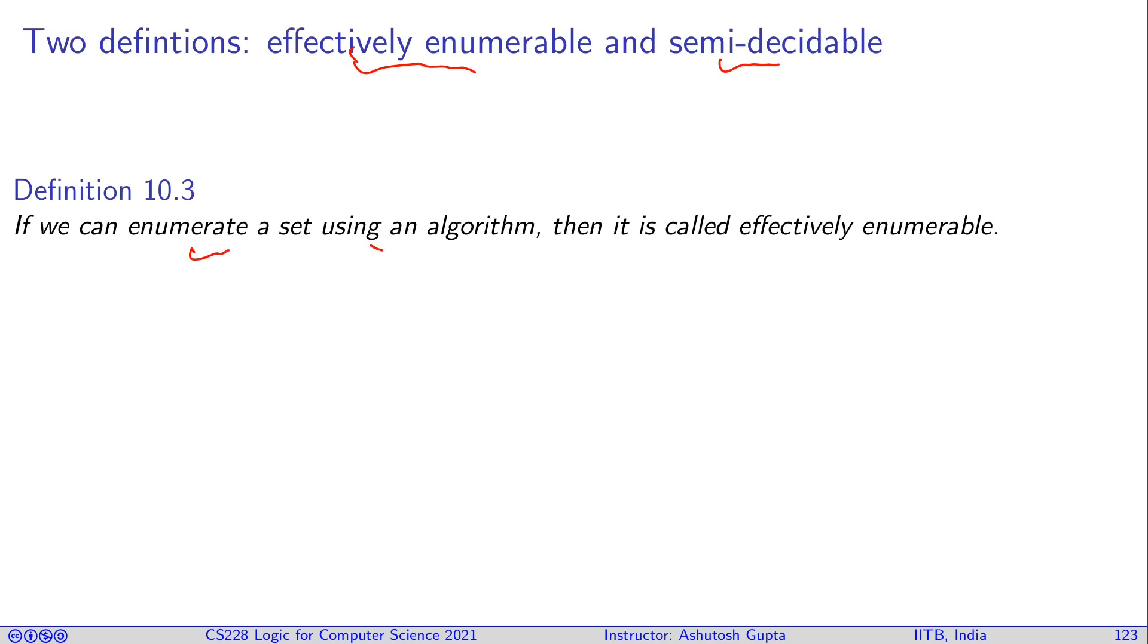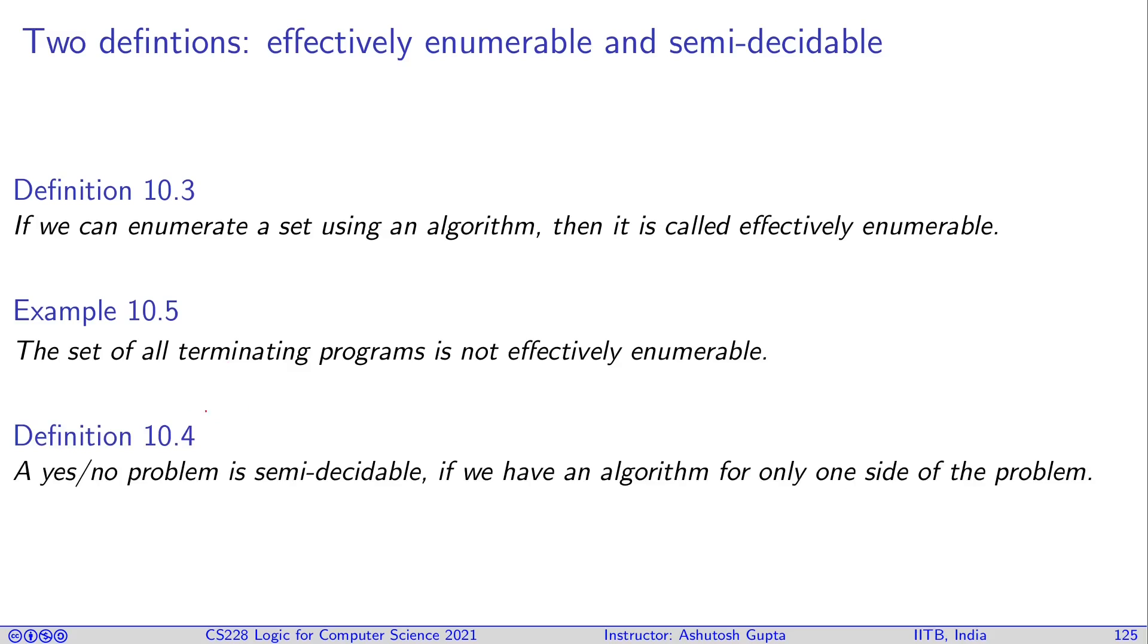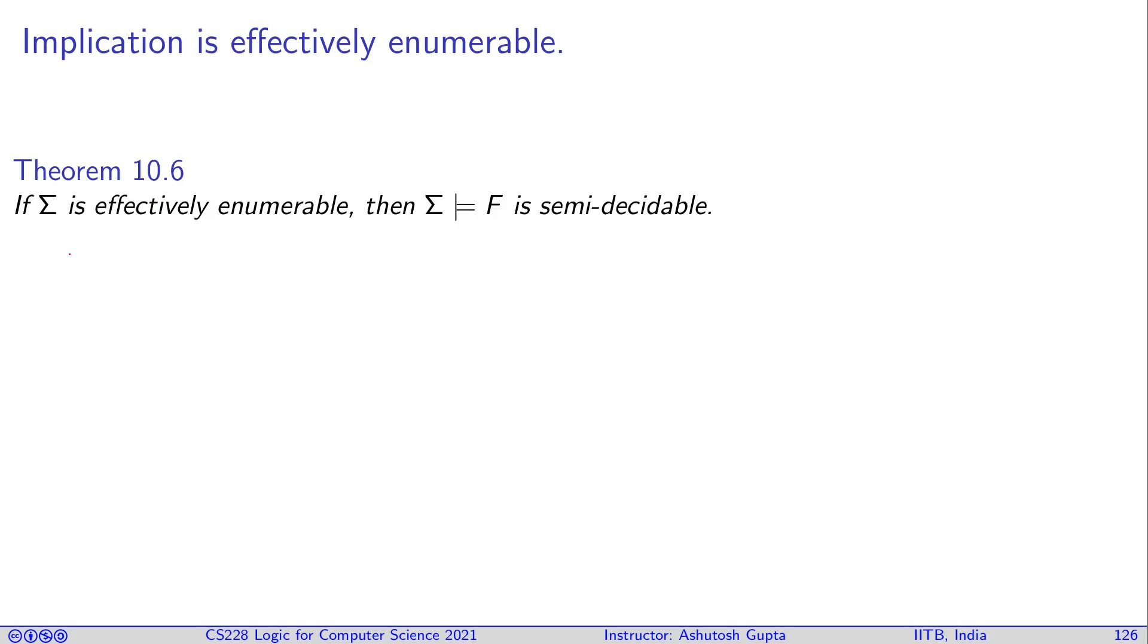If we can enumerate a set using an algorithm, then it is called effectively enumerable set. A set of all terminating programs is not effectively enumerable set because there is no way to do it. A yes or no problem is semi-decidable if we have an algorithm for only one side of the problem. If answer is yes, then you can definitely give the answer. But if answer is no, then you can't decide the question. Slightly confusing idea because you can say yes with confidence, but not no with confidence. How is it even possible? Let's look at an example and that will convince you.